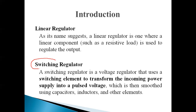Switching means we are providing some switching devices in our regulator — like BJT, MOSFET, IGBT, GTO — there are different types of switching devices. By using those switching devices, we actually transfer the power from one circuit to another circuit, but we get the waveform in that particular switching regulator circuit in pulse form, not in DC form but in the form of pulses. That's why it is called a switching voltage regulator.